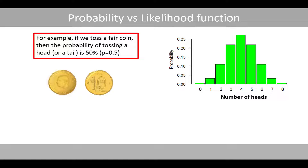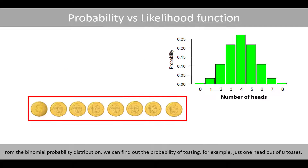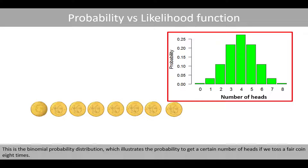For example, if we toss a fair coin, the probability of tossing a head or a tail is 50%. From the binomial probability distribution we can find out the probability of tossing, for example, one head out of eight tosses. This is the binomial probability distribution, which illustrates the probability to get a certain number of heads if you toss a fair coin eight times.